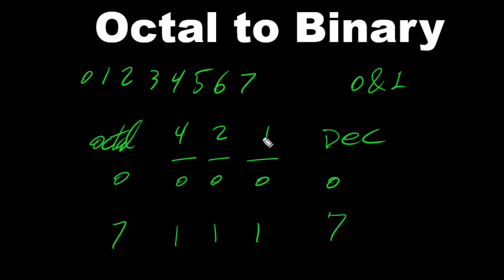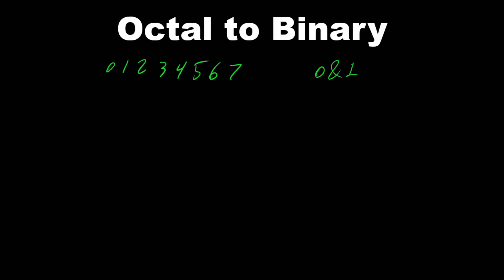If we had only 2 bits, that wouldn't be enough for the octal range. And if we had more than 3 bits, that would give us more numbers than octal has. Therefore, for every octal digit we use exactly 3 bits.